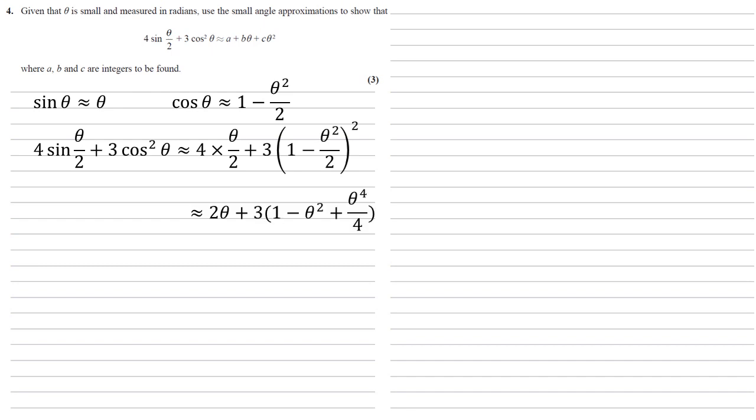The left-hand term becomes 2θ. The square of those brackets: 1 times 1 gives us 1, we'll have two lots of 1 times negative θ²/2, so that gives us -θ², and then the square of -θ²/2 gives us θ⁴/4.